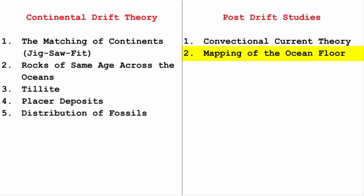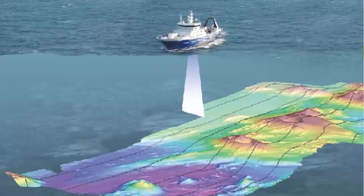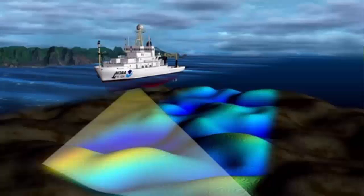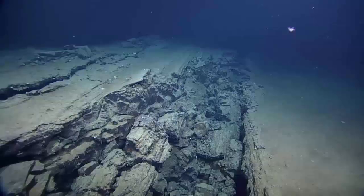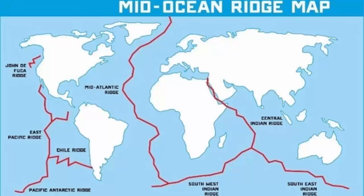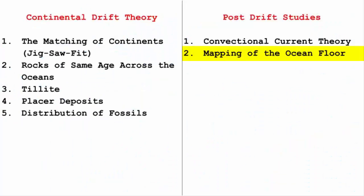The second point in post-drift studies is the mapping of the ocean floor. When the ocean floor was being mapped, scientists saw that the ocean bed is not flat — it has similar terrain and uneven surface just like on land. They also found mid-oceanic ridges: long ranges of mountains formed from magma that came out of the mantle. Rock samples from mid-oceanic ridges were comparatively younger in age than those from the continental side, leading to the conclusion that as we move away from mid-oceanic ridges, the age of rocks increases.